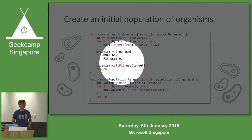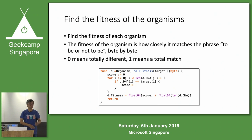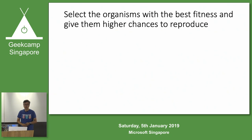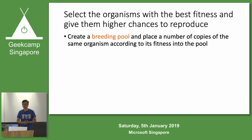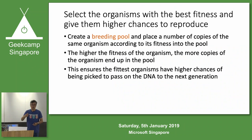The fitness is calculated based on how close the byte array matches the phrase 'to be or not to be', byte by byte. A score of zero means it's totally different, and one means it's a total match — we want to achieve one. We create what is called a breeding pool and place a number of copies of the same organism according to its fitness into the pool. The higher the fitness of the organism, the more copies that end up in the pool, giving it a higher probability of generating the next generation.